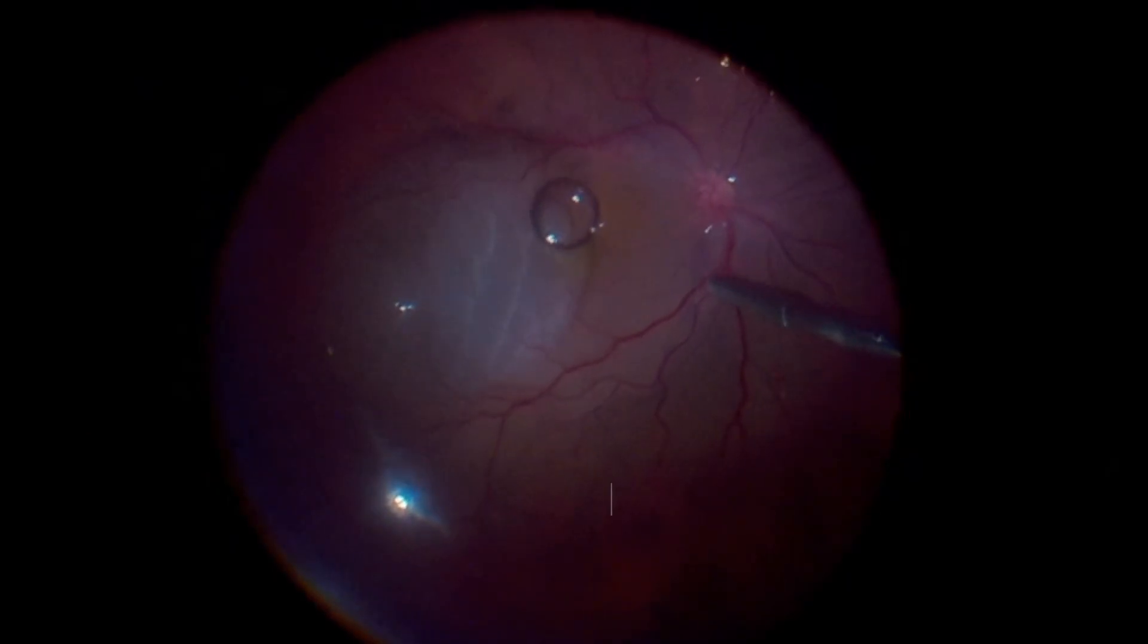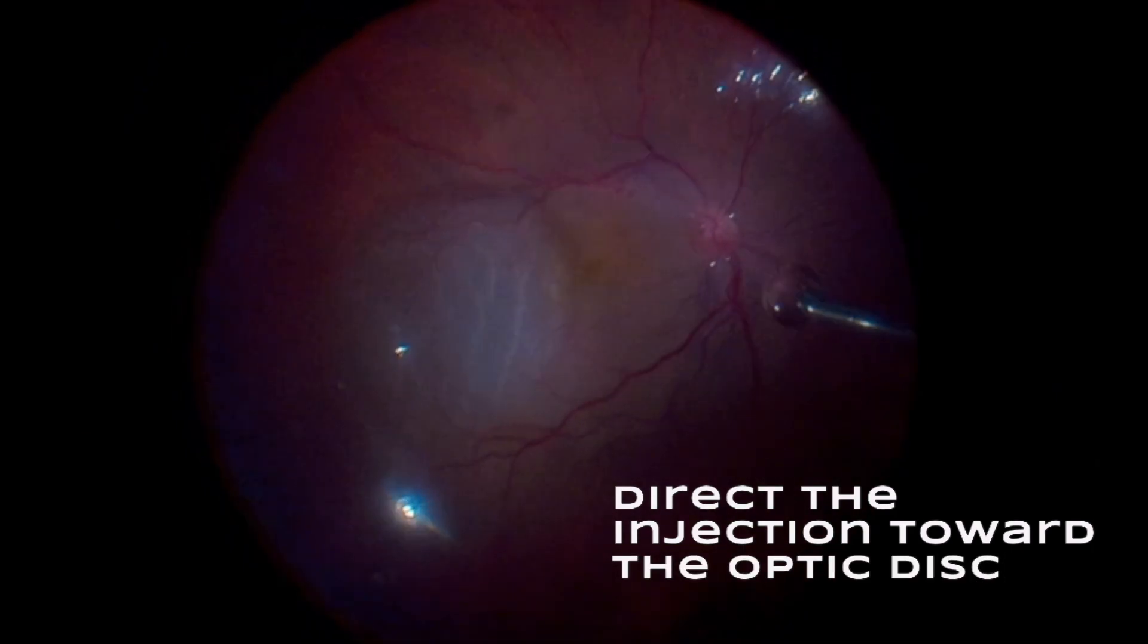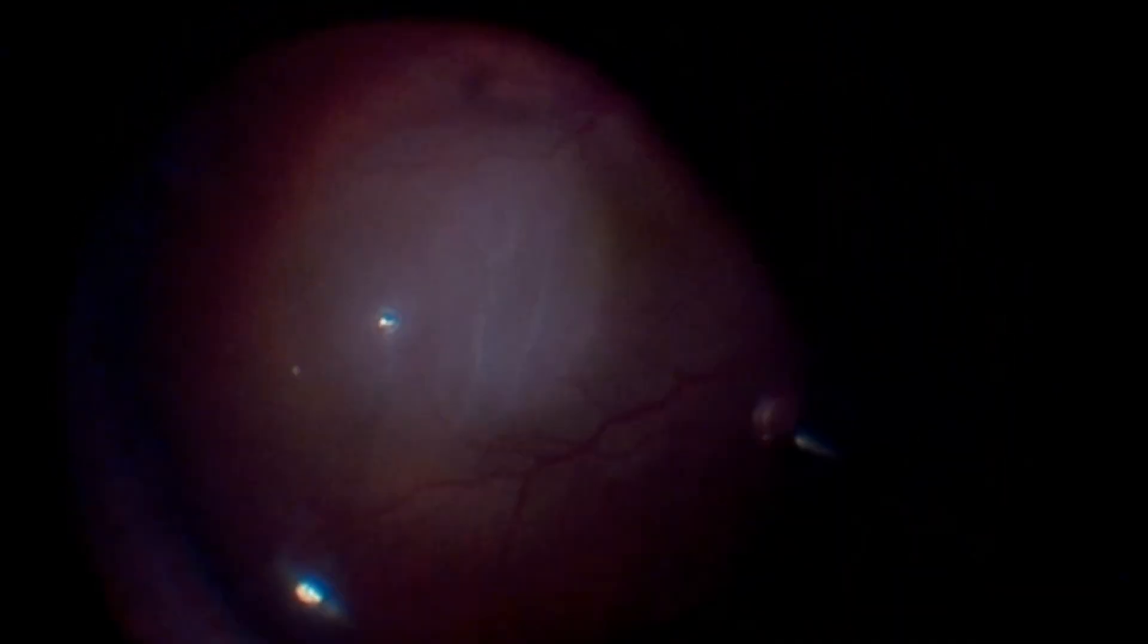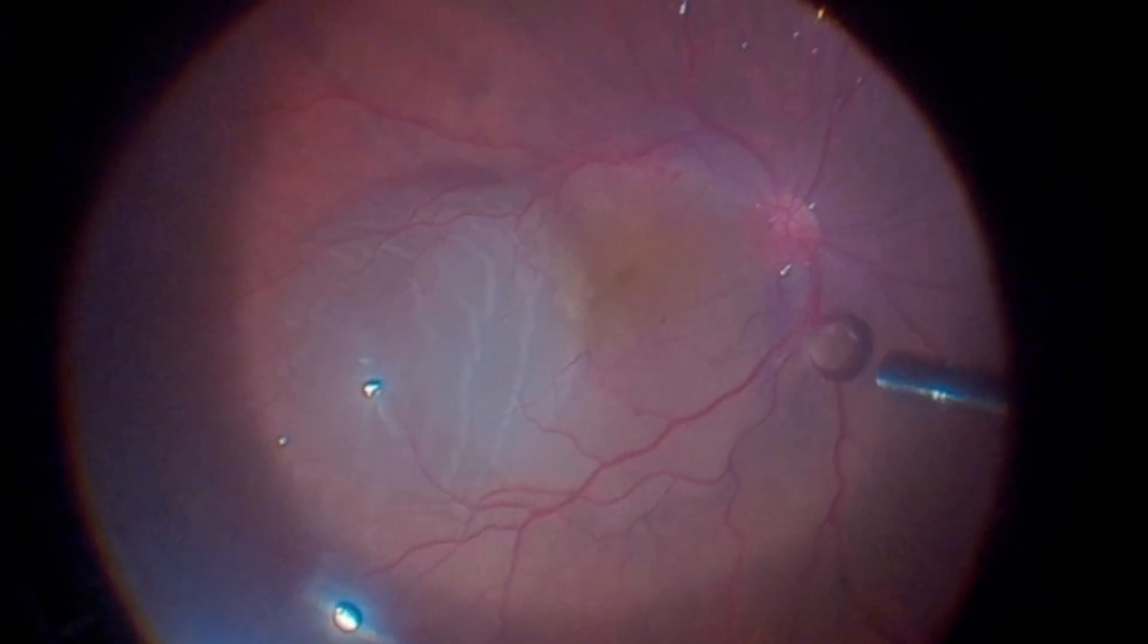It is recommended that the injection be directed toward the optic nerve instead of aiming at the retina. When the flow is directed toward the retina, direct migration of the substance to the subretinal space may occur.